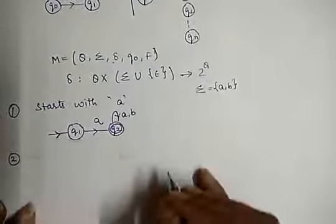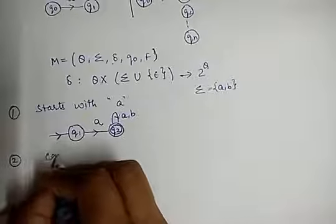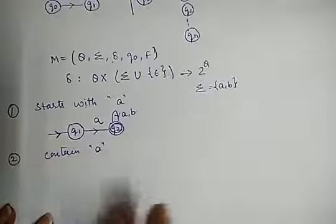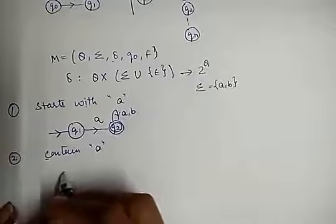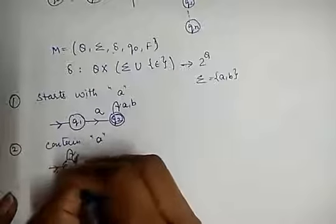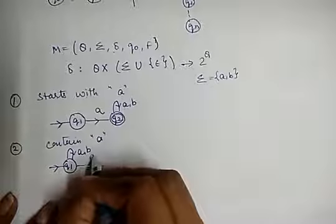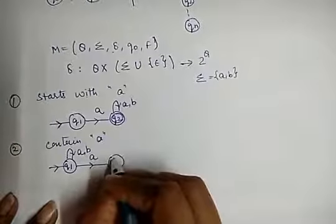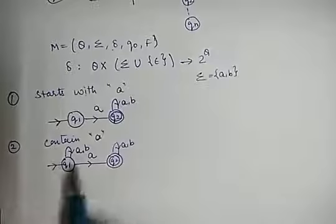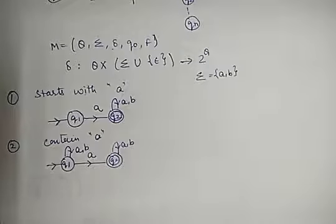Next example: I have to draw an NFA for all strings which contain A — either in the beginning, in the middle, or at the end. Suppose Q1 is the initial state. At the beginning it can be A or B, in the next state it can be A, and at the final state it can be A or B. So any string which contains A can be accepted by this NFA.